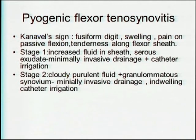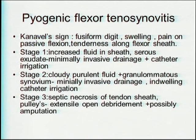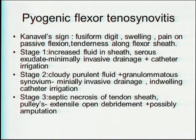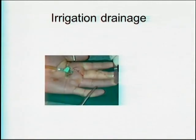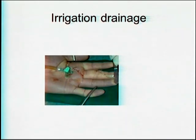In stage two, there is cloudy pus in the fluid with granulomatous synovium — you still do minimally invasive drainage with an indwelling catheter irrigation for 24 to 48 hours. In a further advanced stage with septic necrosis of the tendon sheath and pulleys, you perform extensile open debridement and possibly amputation, though you should withhold that until after several debridements and proper irrigation. You need to maintain this continuous irrigation.